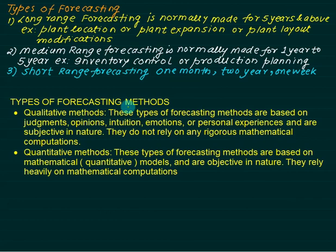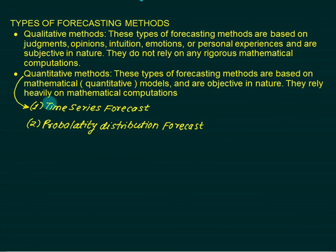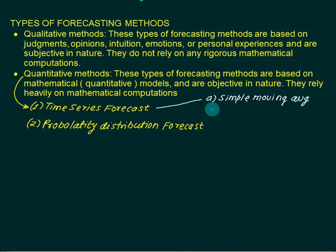Now let's classify the types of forecasting methods. Mainly there are two types: qualitative and quantitative. Qualitative methods are based on judgment, opinions, intuition, emotion, or personal experience — they are subjective and do not rely on rigorous mathematical computations. Quantitative methods are based on mathematical models and are objective in nature, relying heavily on mathematical computations. The quantitative method is further divided into two types: time series forecasting and probability distribution forecasting. Time series is further divided into: simple moving average and weighted moving average.